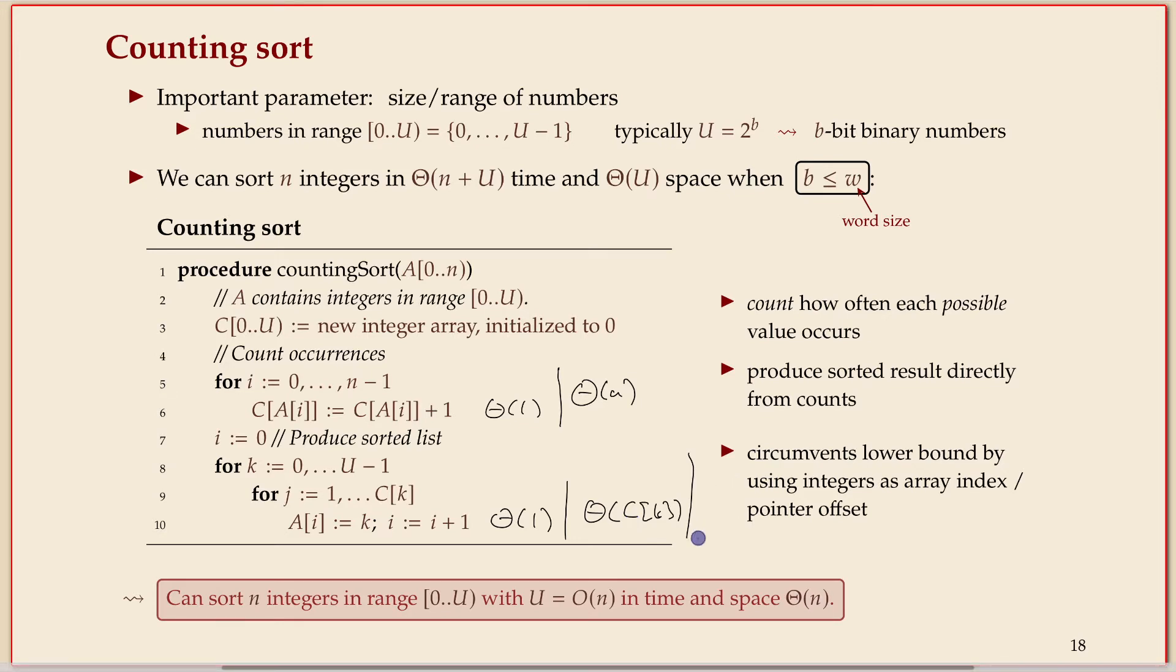The trick here is to not treat each of these inner loops in isolation because we don't know what c of k is. That's the count of some number we don't know. But we know the sum of all the c of k, and those range from 0 to U. Now we know that this sum must be n because we counted occurrences in the array and there were n numbers to start with. And so that's why you get this time, which as you may notice, there's no n log n in there. In particular, if the range of the numbers is not much bigger than n, it's only a constant times n or bounded by a constant times n, then the overall running time is linear.